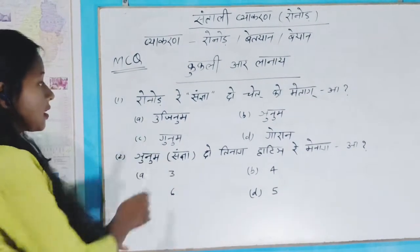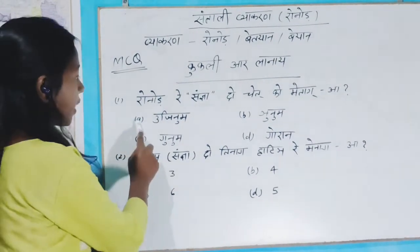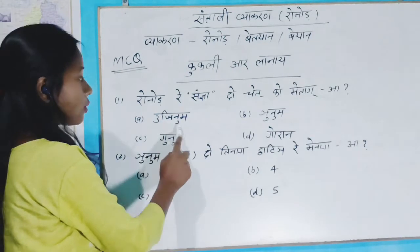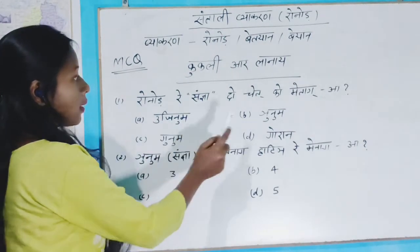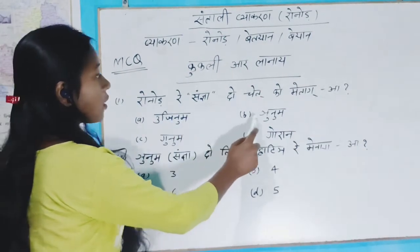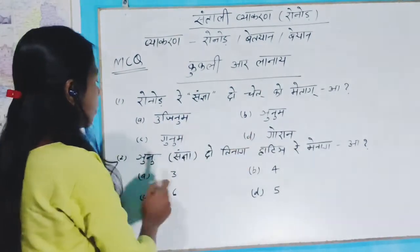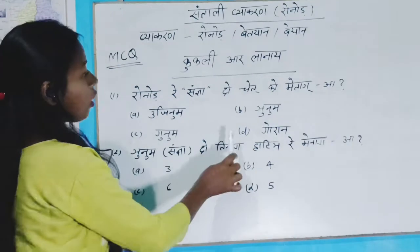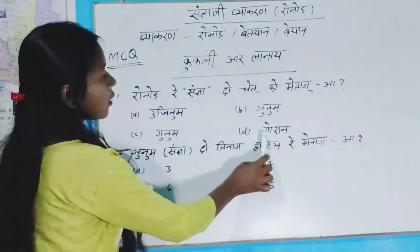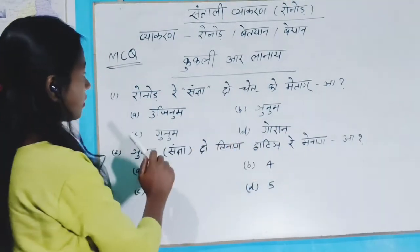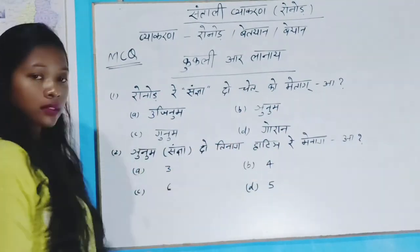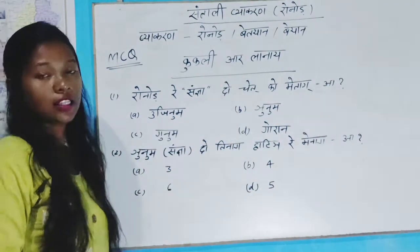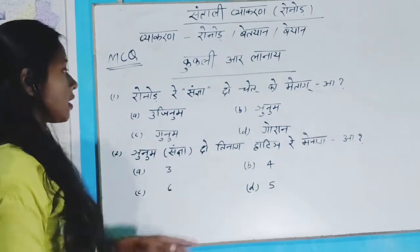The option is A, U, U, C, U, D. So the question is, what is the answer?